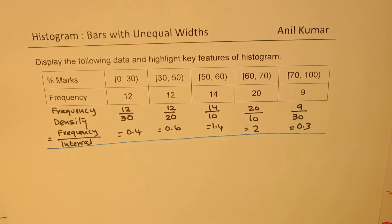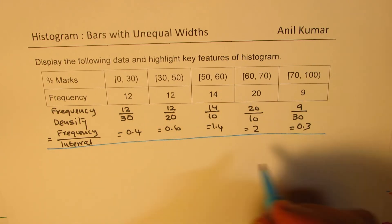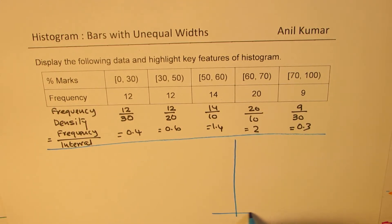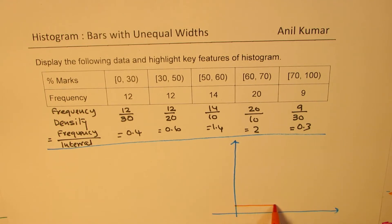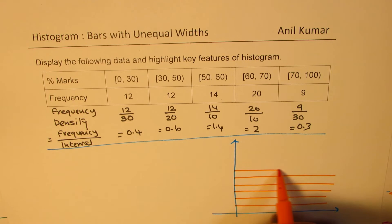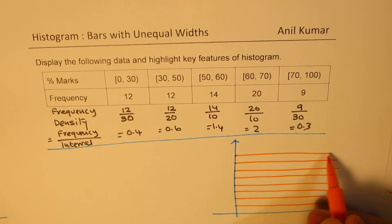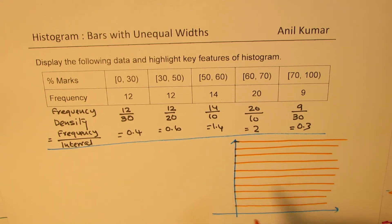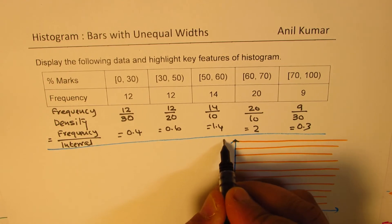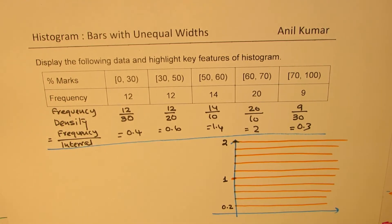Now we should see how to sketch the graph. We are going to make a histogram with five intervals, which are unequal. Frequency density varies up to 2, so I'll draw a rough sketch — a graph paper with the y-axis showing values up to 2, each division being 0.2. On the x-axis we need intervals from 0 to 100. That is how we have our divisions.